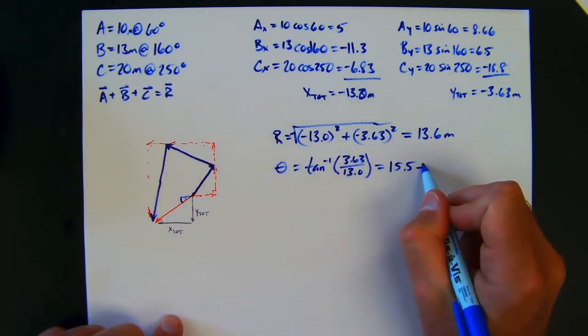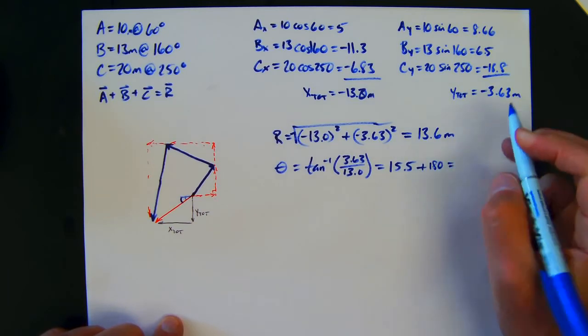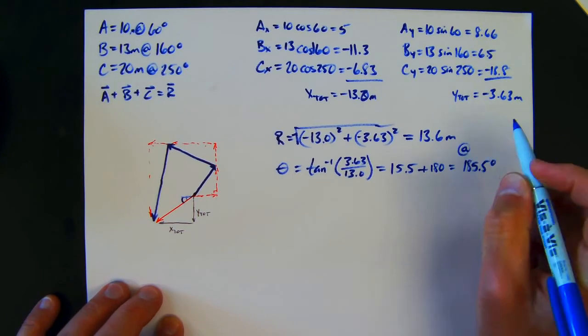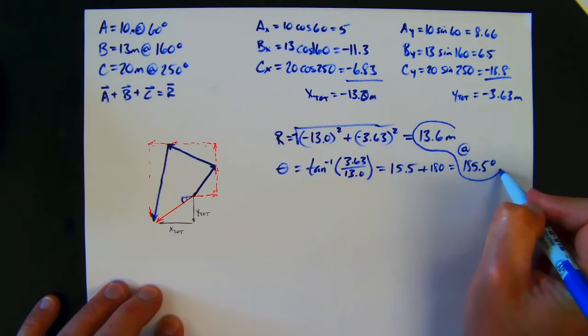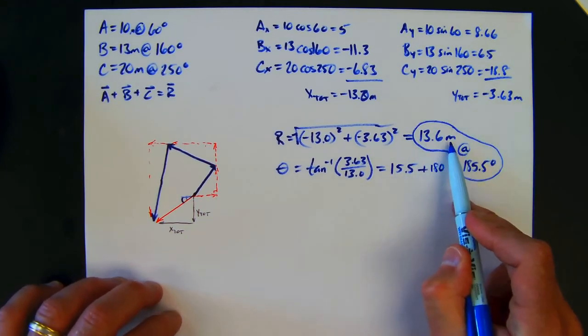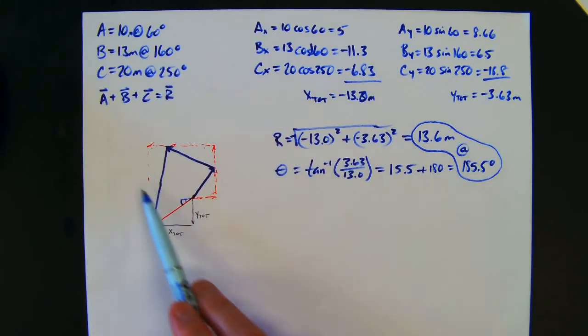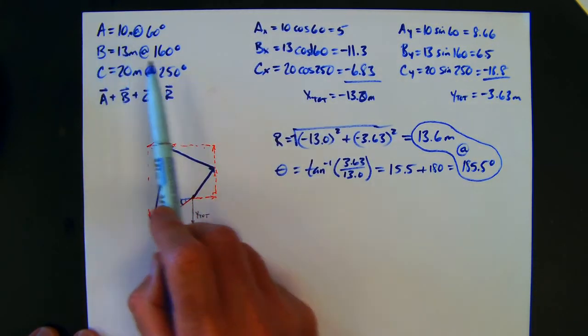So my final answer, my final vector answer, is going to be that 13.6 at 195.5 degrees. Now you can use this method on any types of vectors, any kind of vectors that you're adding together. If it's just two vectors you're adding together, you do the same thing.